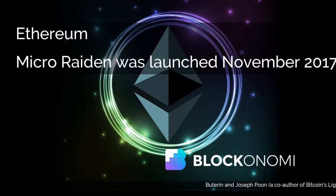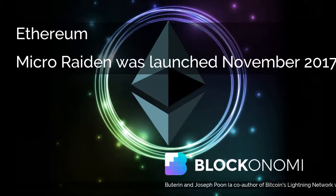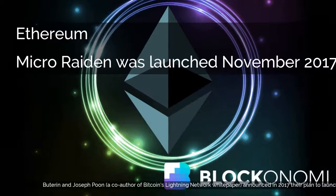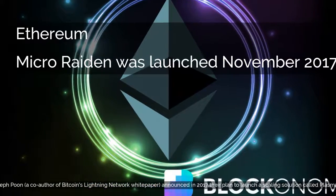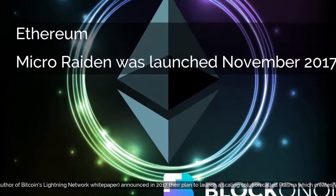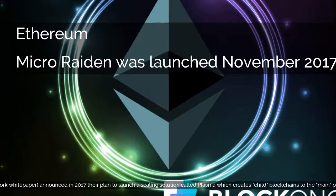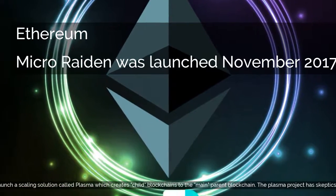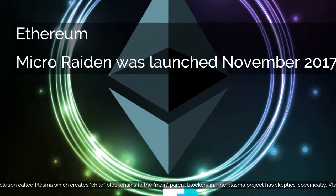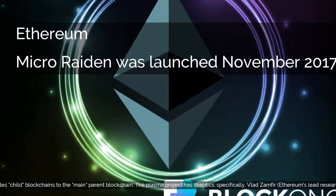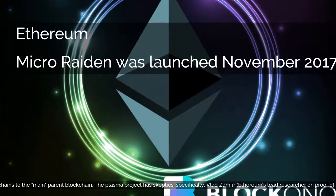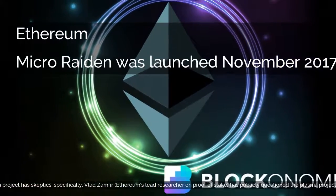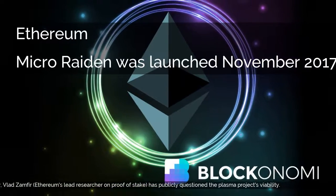Buterin and Joseph Poon, a co-author of Bitcoin's Lightning Network white paper, announced in 2017 their plan to launch a scaling solution called Plasma, which creates child blockchains to the main parent blockchain. The Plasma project has skeptics; specifically, Vlad Zamfir, Ethereum's lead researcher on proof-of-stake, has publicly questioned the Plasma project's viability.